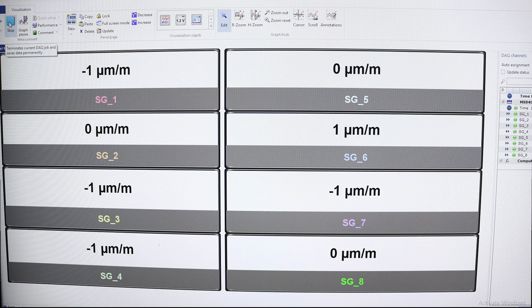Before applying any loads, balance the gauges and record the values at each strain gauge. These are the initial zero readings.